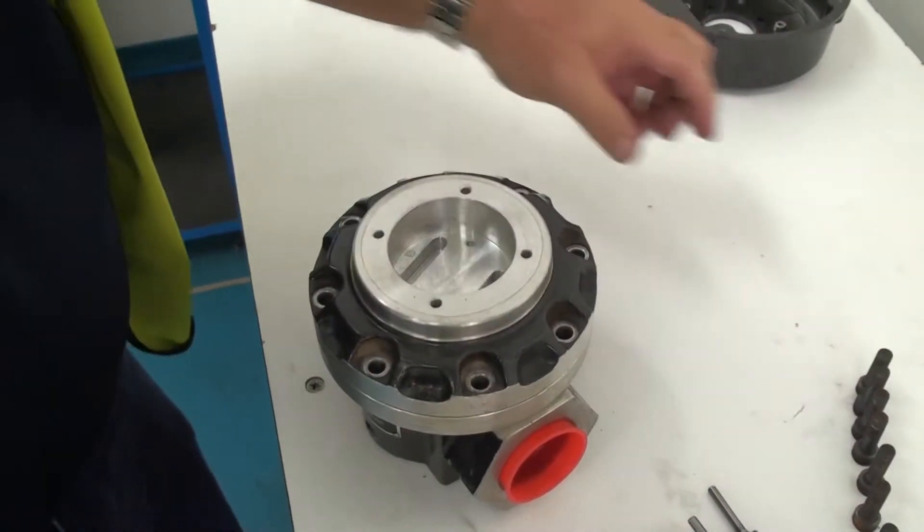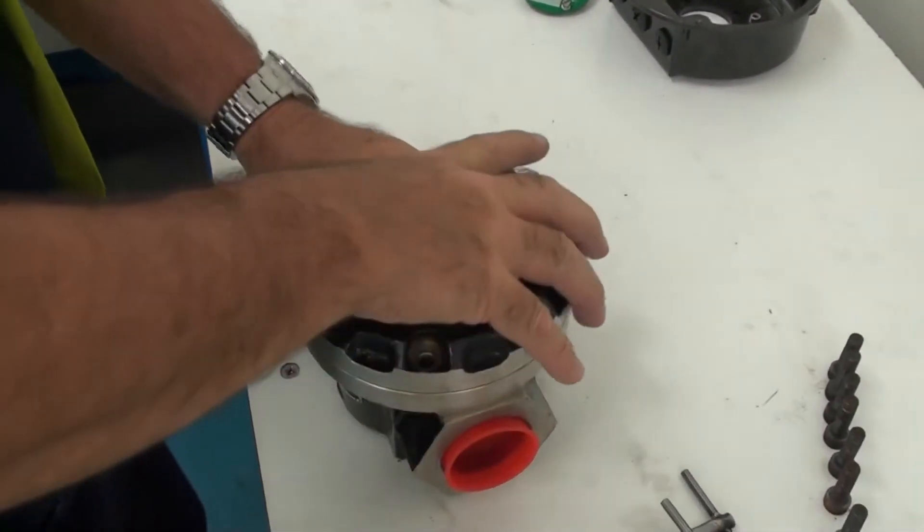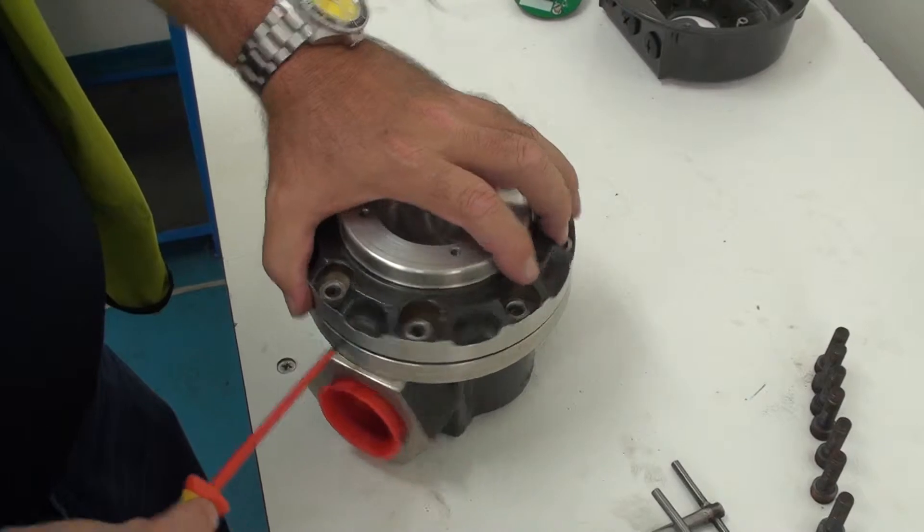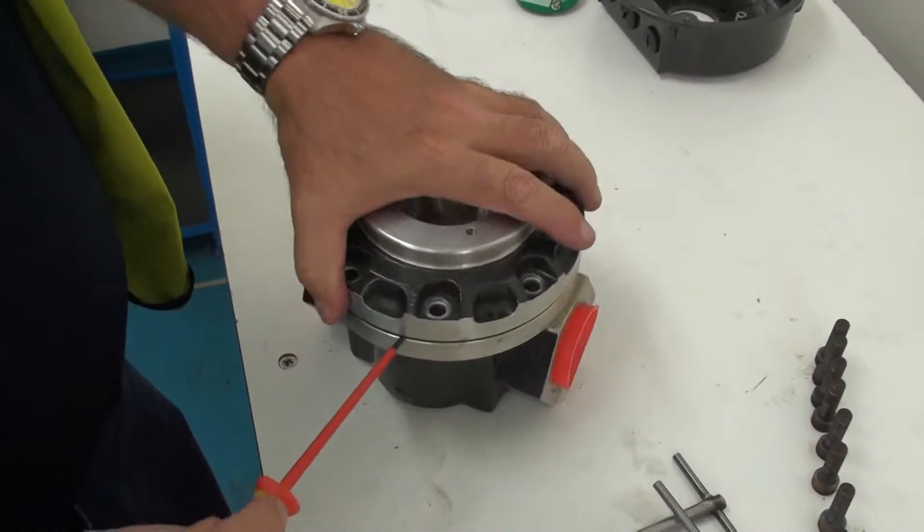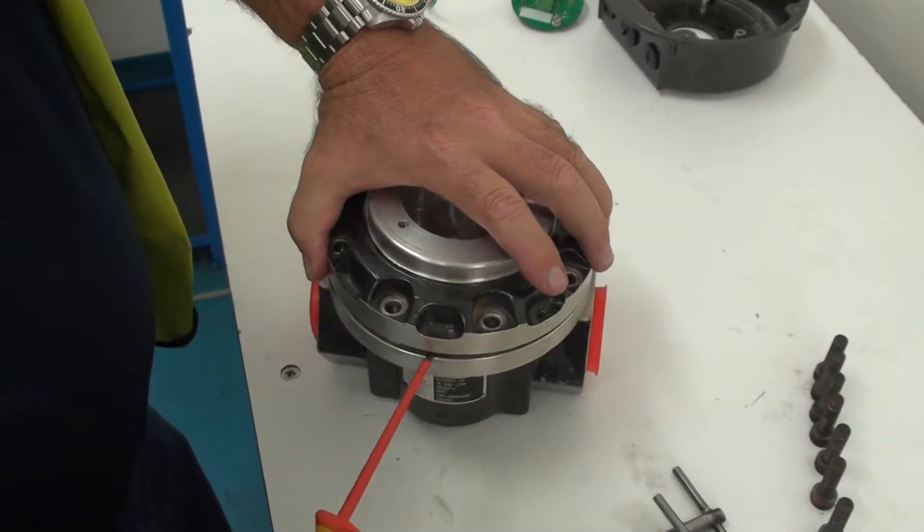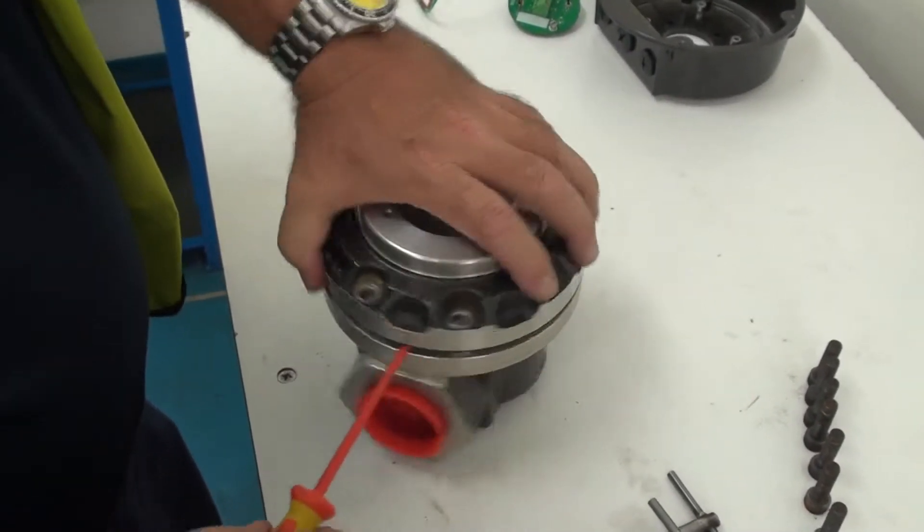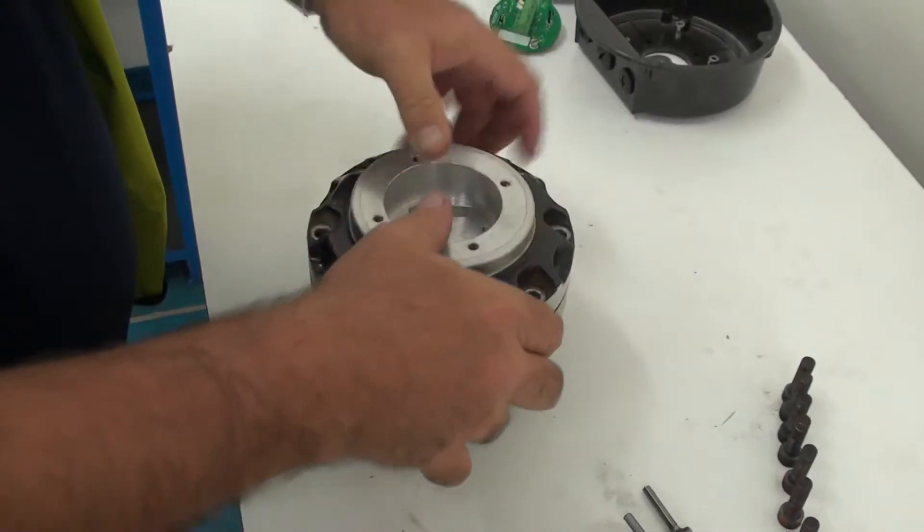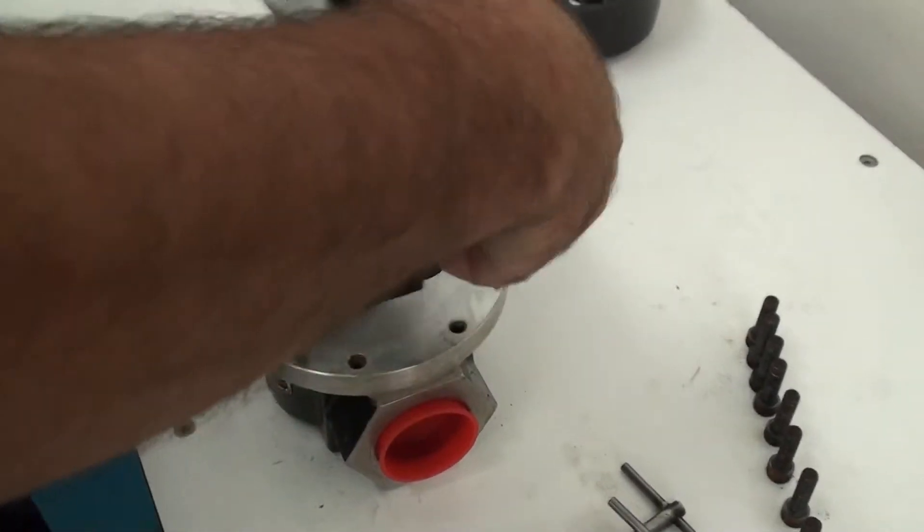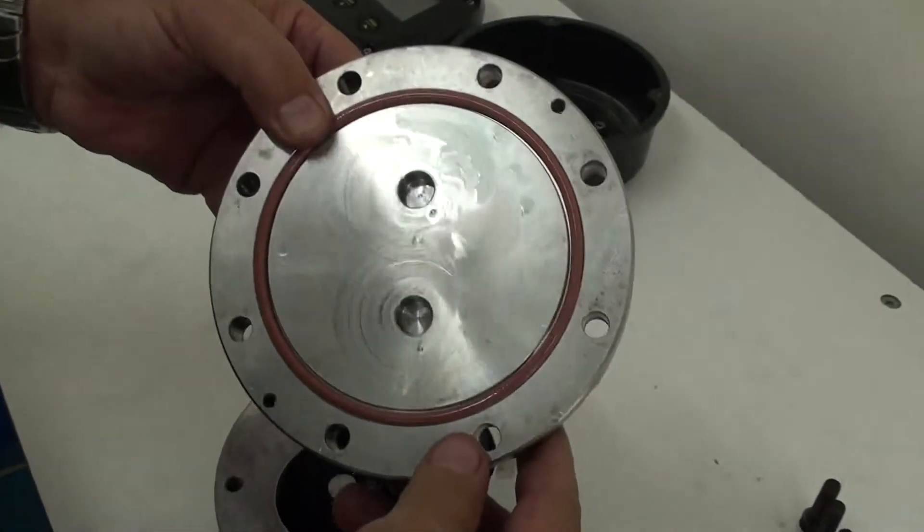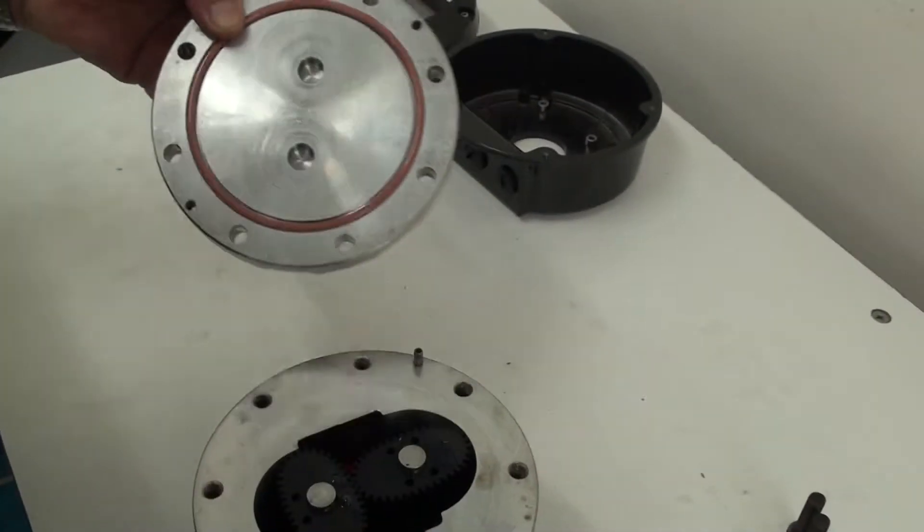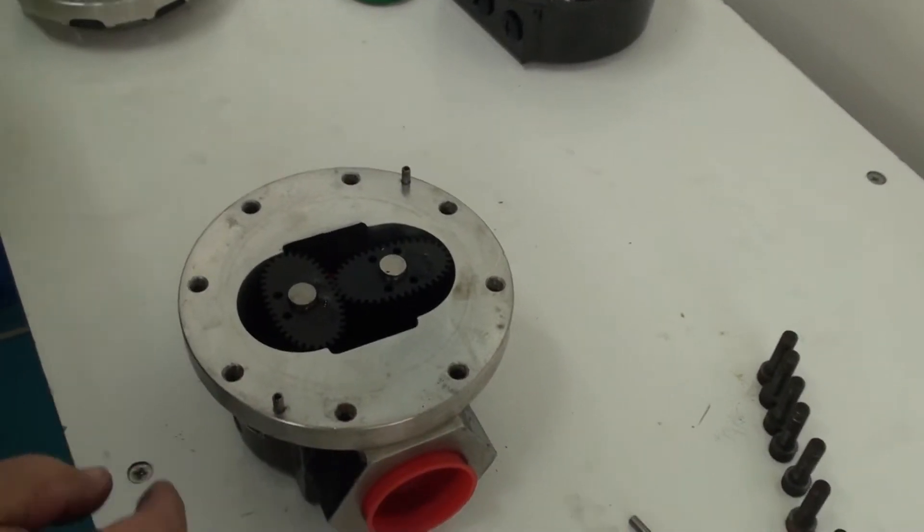Once you have all the bolts out of the meter body then it's a matter of just gently prising the meter cap off the meter body and this is done gently by just working your way around and then just lifting that meter cap off. As you can see that's the top of the meter cap with the seal and the two rotor shaft supports. We'll put that on the bench and out the way.